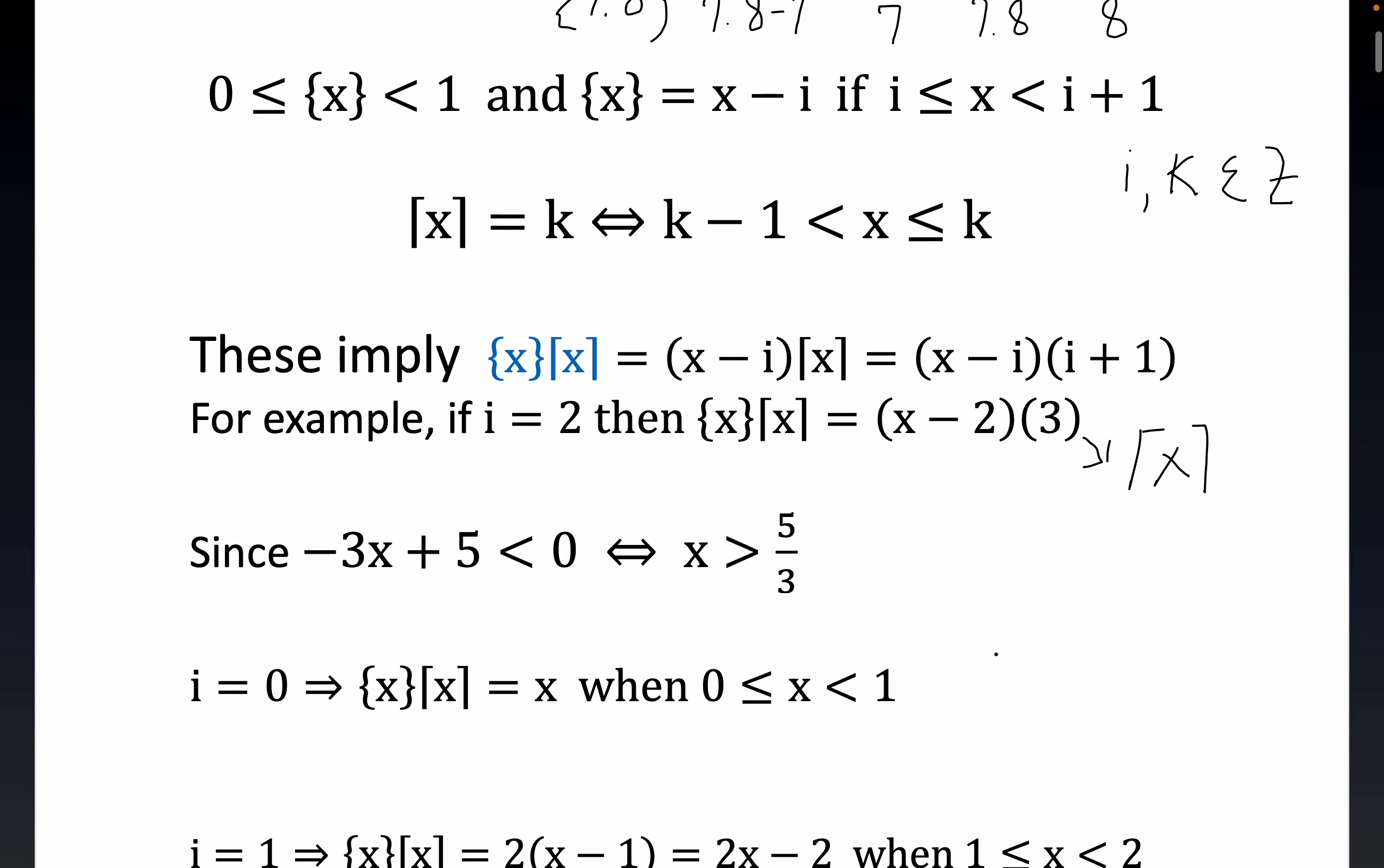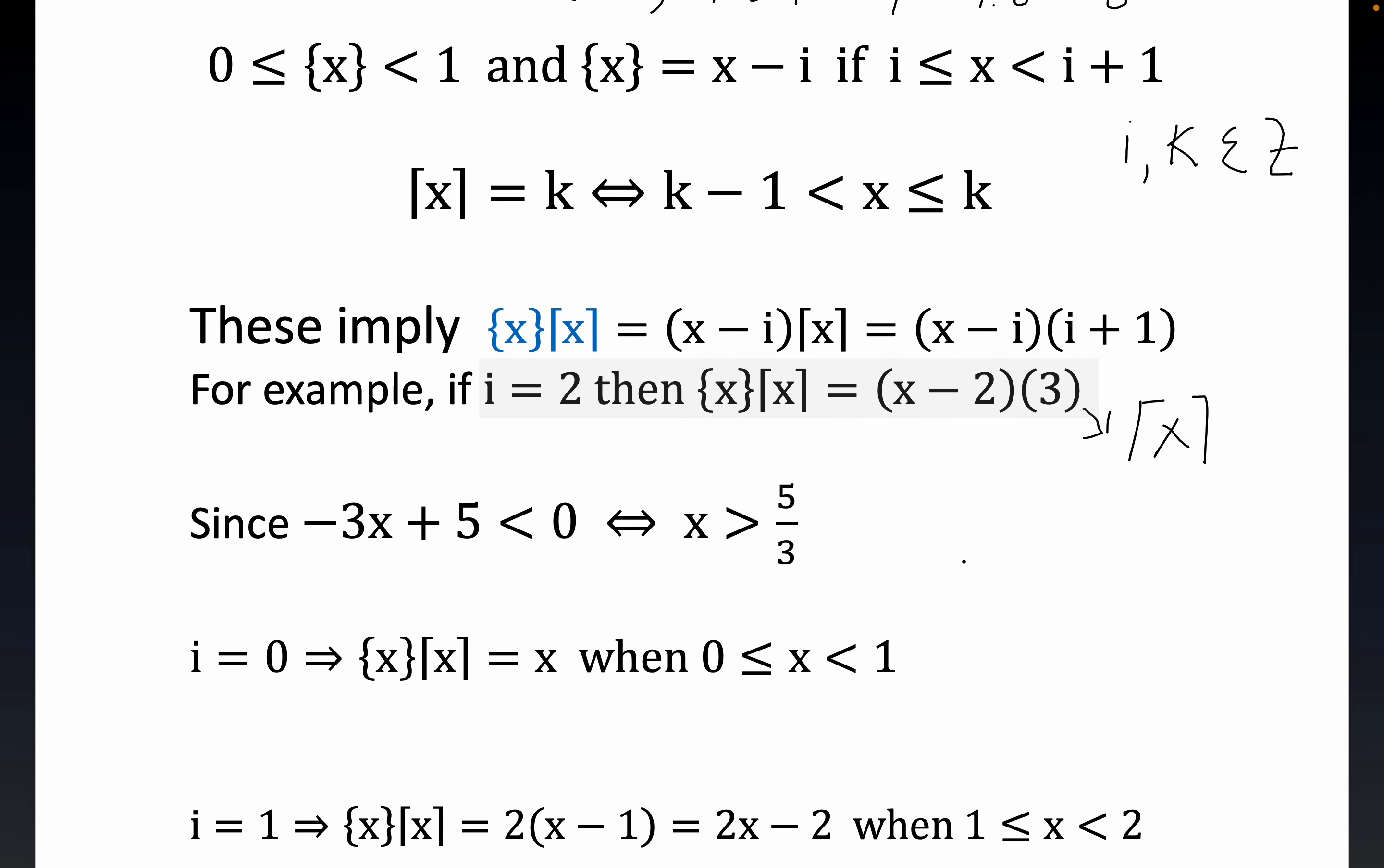Now, another thing that's important here, coupled with the fact that our object, the ceiling of x times the fractional part of x, this is always going to be greater than or equal to 0 whenever x is greater than or equal to 0. So you see, it's always positive for x greater than or equal to 0, definitely.